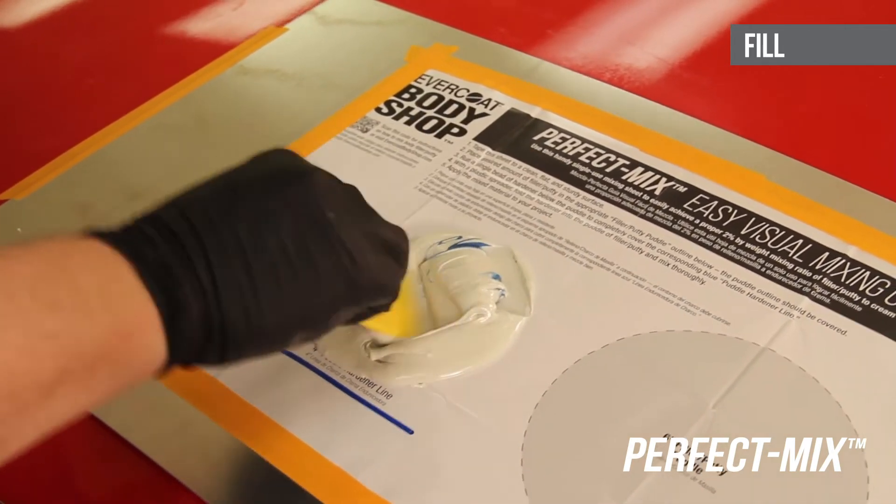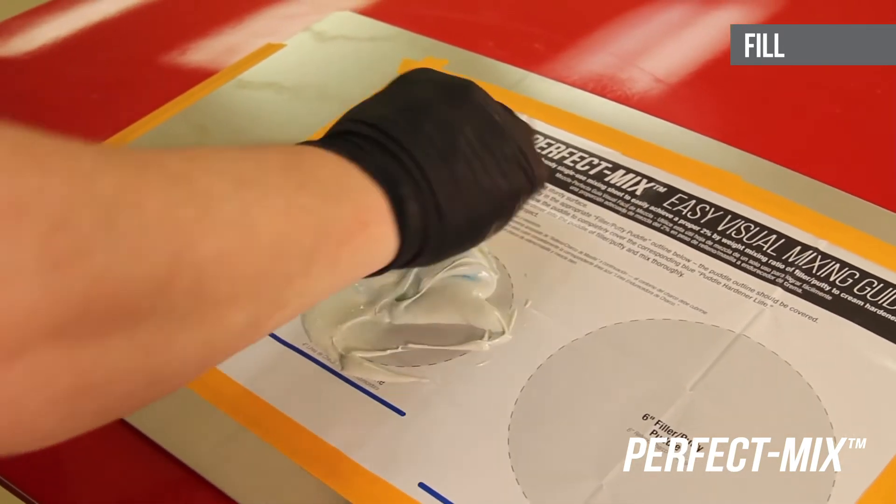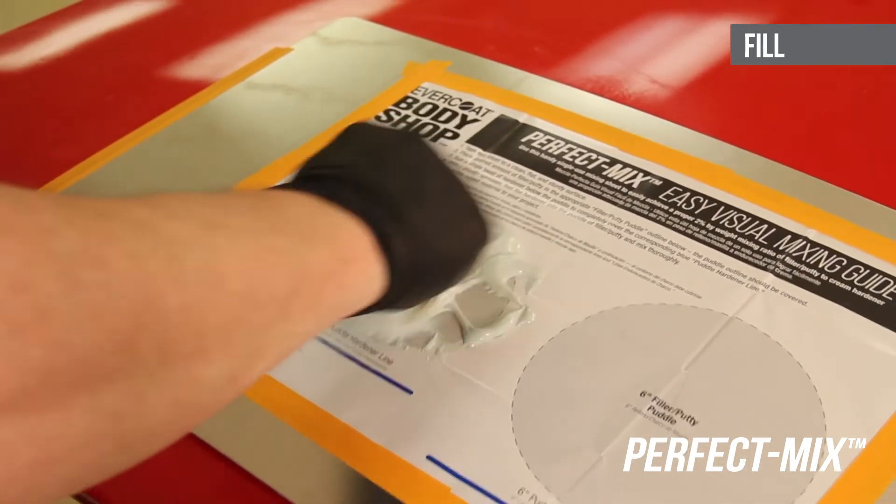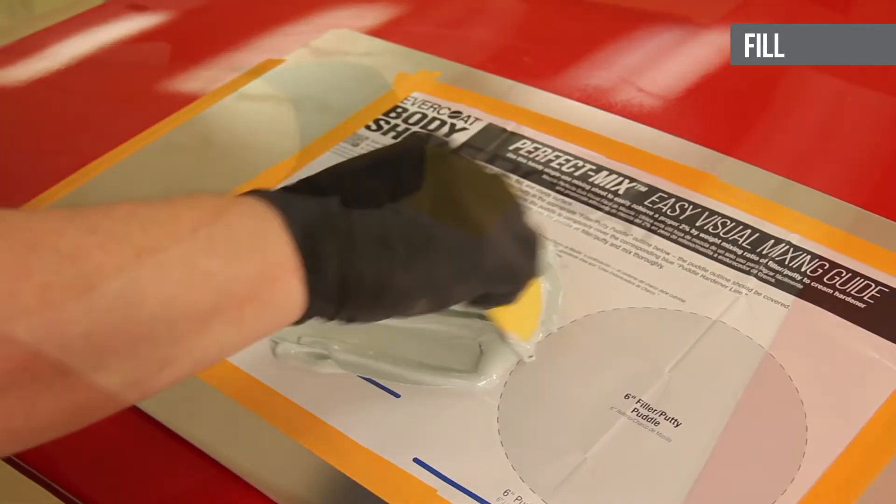Thoroughly fold the body filler and cream hardener together with a spreader until the color is uniform. Make sure there aren't any dark streaks of blue left after mixing. Additional Perfect Mix mixing guides can be purchased from your retailer.